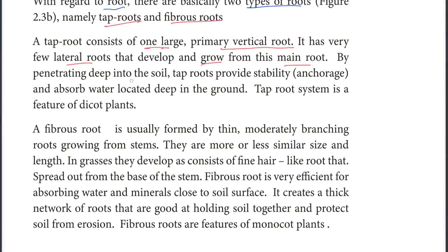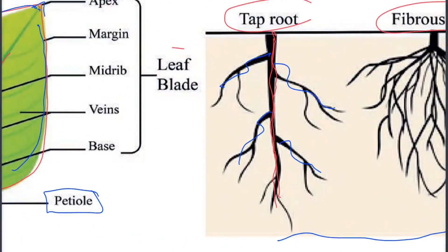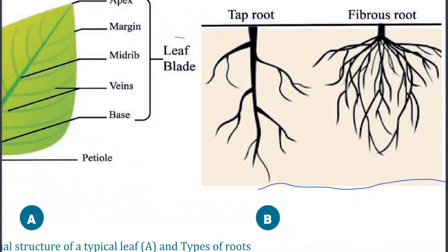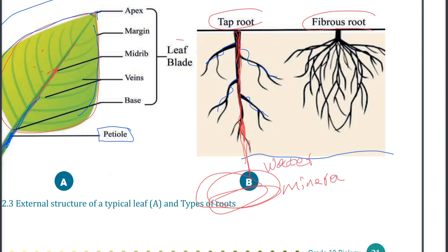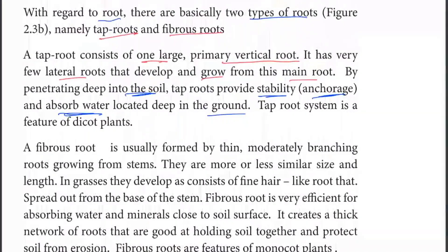By penetrating deep into the soil, the roots provide stability and absorb water located deep in the ground. The taproot system is a feature of dicot plants.